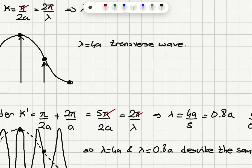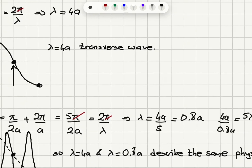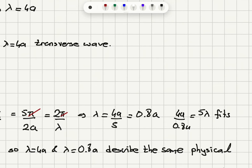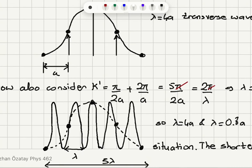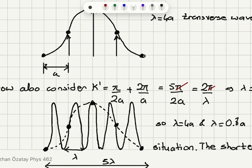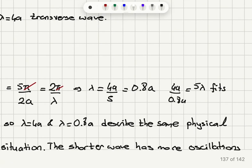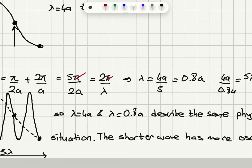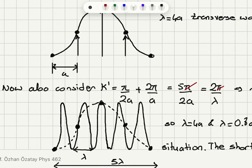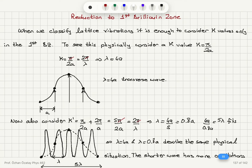So 4a — that is the distance between the first atom and the last atom — divided by 0.8a means that we are going to fit 5 wavelengths between these two points. Starting from the first one, I have fit 5 wavelengths. As you can see, what the atoms are actually doing is identical to what we had at λ = 4a. So λ = 4a and 0.8a describe the same physical situation, but the shorter wave has more oscillations. As far as the observable — what these atoms are doing — it's identical to the λ = 4a situation.